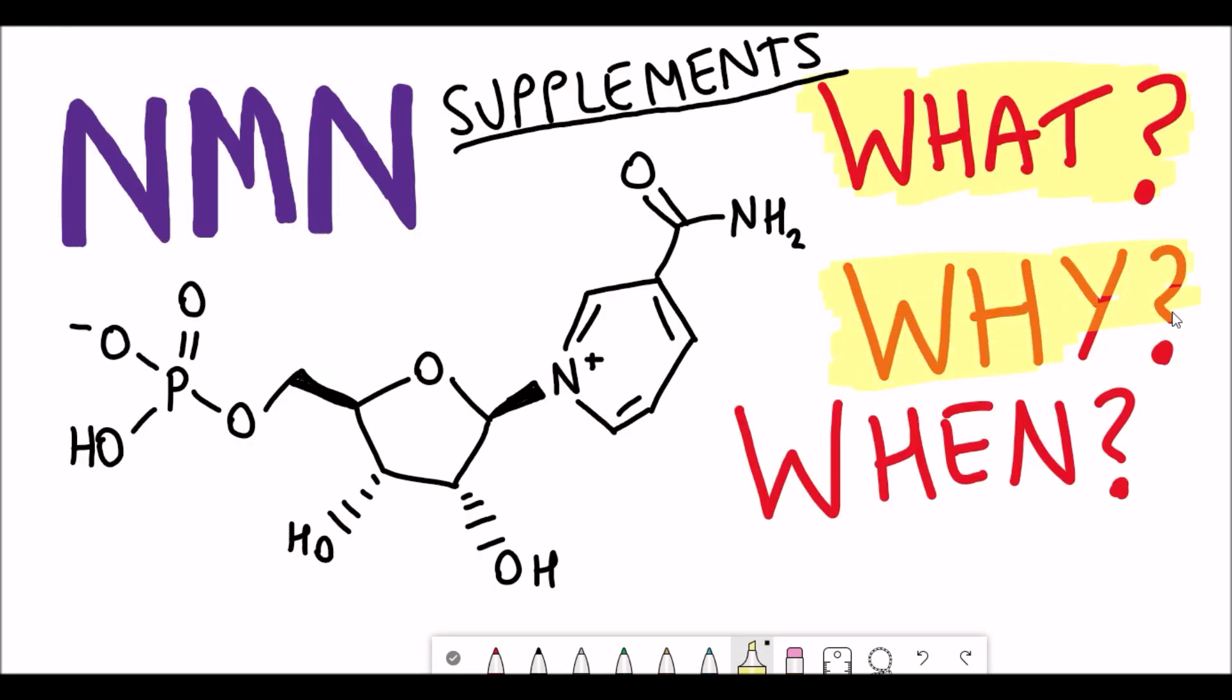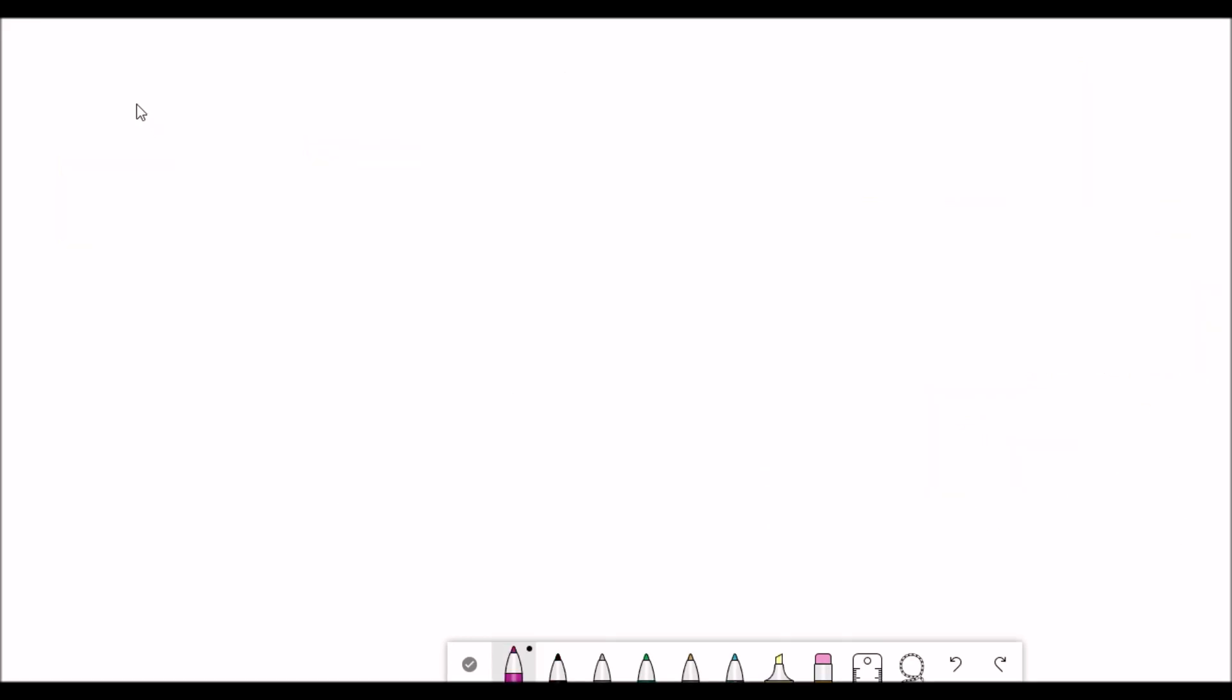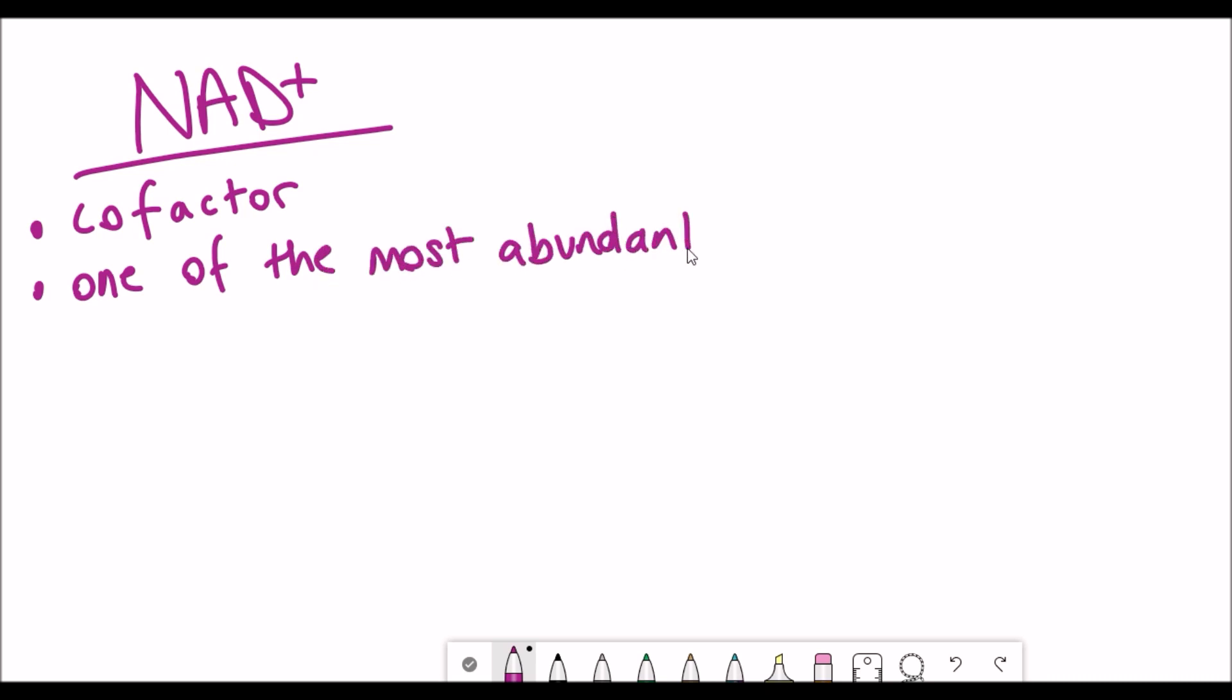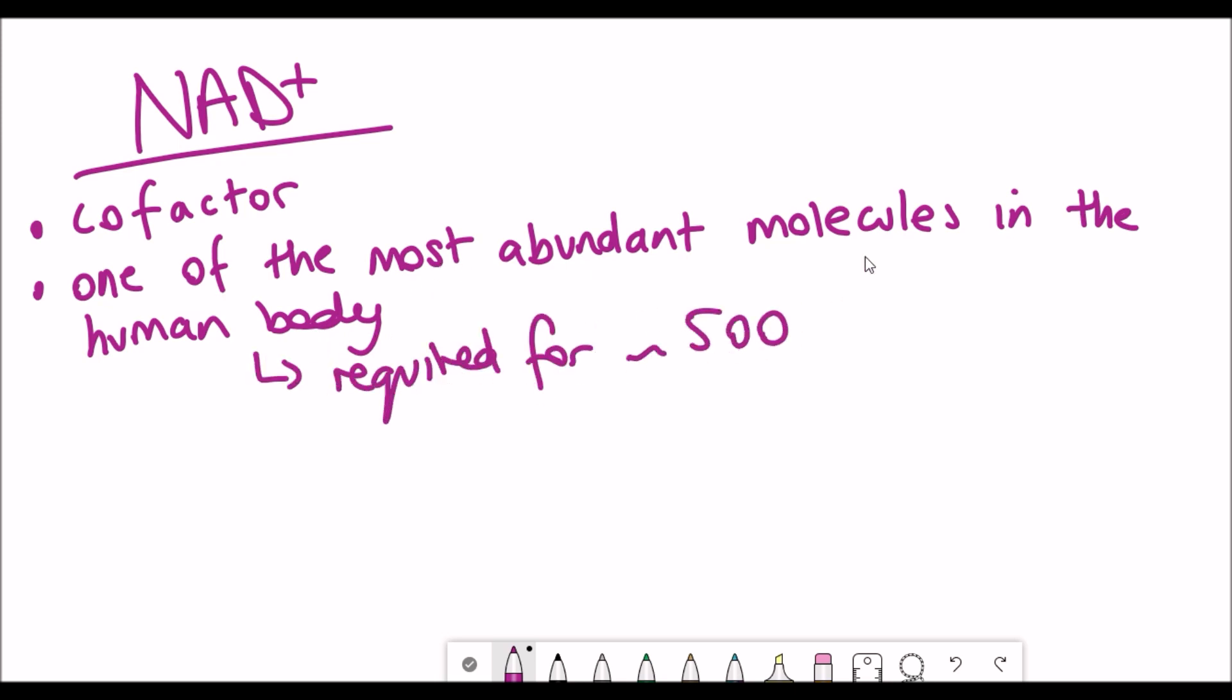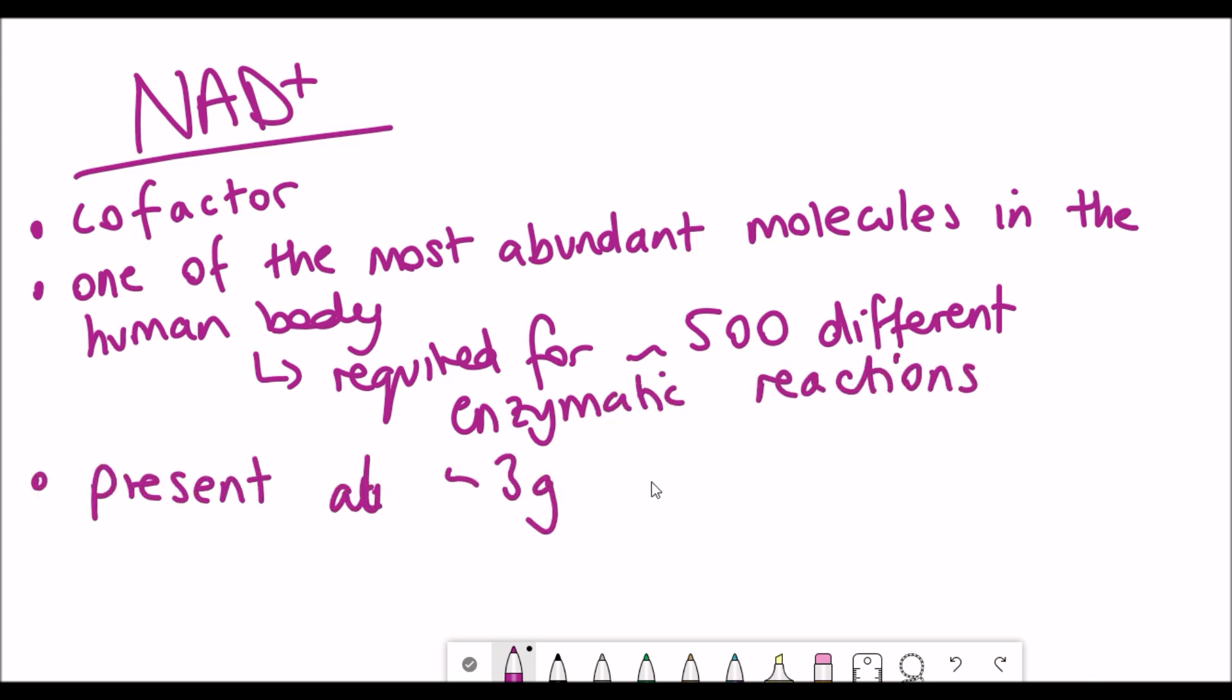In order to understand why people would take NMN you have to understand why we need NAD. NAD is a co-factor and co-factors are required for enzyme activity and enzymes are proteins that catalyze biochemical reactions within cells. NAD is one of the most abundant molecules within the human body and it's required for around 500 different enzymatic reactions. The average person has around 3 grams of NAD within themselves.